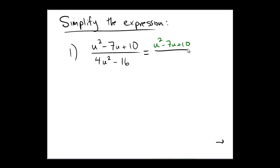Between 4 and 16, the greatest common factor there would be the number 4. And what's left over is a u squared minus 4. 4 times u squared is 4u squared and 4 times 4 is 16.